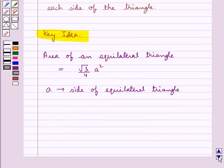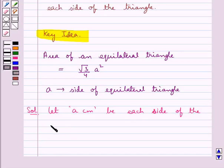Let's move to the solution now. We consider let A cm be each side of the equilateral triangle.